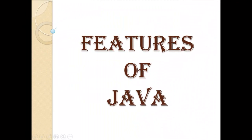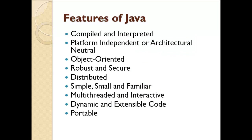In this video tutorial I am going to tell you about some basic features of Java. Here is the list: compiled and interpreted, platform independent or architecture neutral, object oriented, robust and secure, distributed, simple small and familiar, multi-threaded and interactive, dynamic and extensible, and code portable.